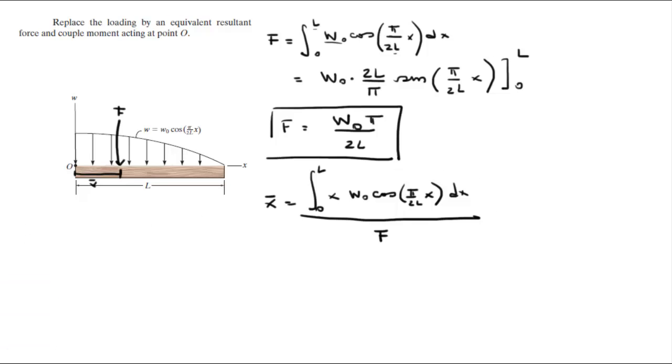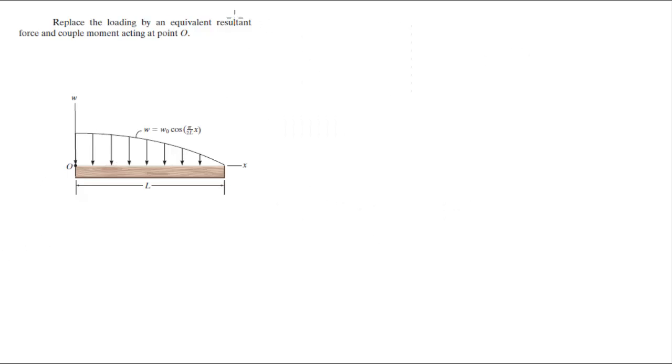Let me open a new page to do this integral. I'm gonna do this integral in pieces. You can bring out the constant and you get W0 from 0 to L, X cosine of pi over 2L X dx. Remember we know from calculus that U of X times the derivative of V of X dx is equal to U of X times V of X minus V of X times the derivative of U of X dx.